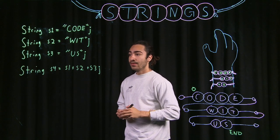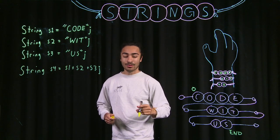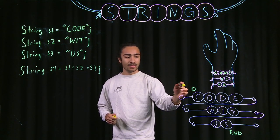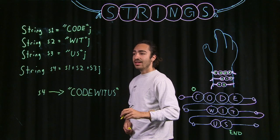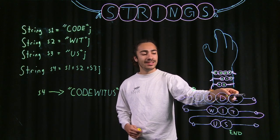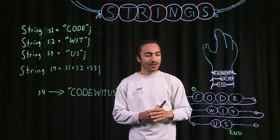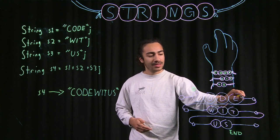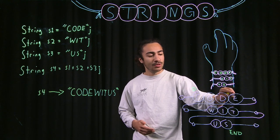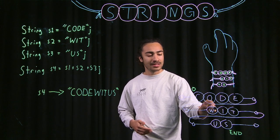And if we were to print out S-4, we will get code with us. And as you can see, there's no spaces because we never added a space character or a blank bead. So whenever we connect these, you can think of it as this bead going directly to this bead or this character going directly to this character.